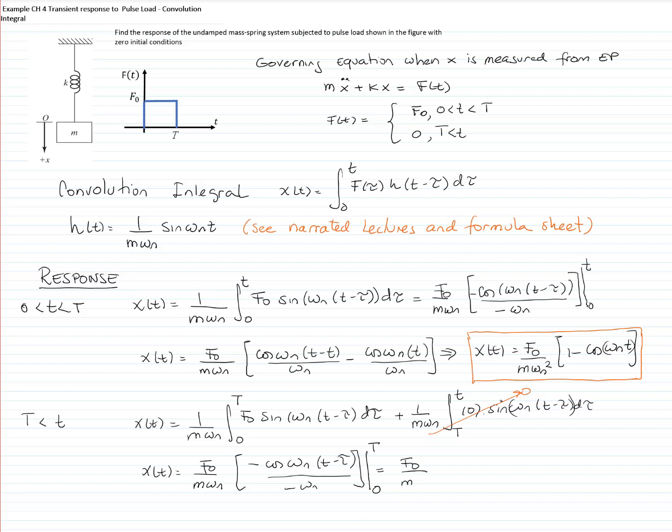And that gives me that this is equal to F sub 0 divided by m omega n squared, in brackets, cosine of, the two negative values cancel out, but I have omega n times t minus capital T minus omega n t.